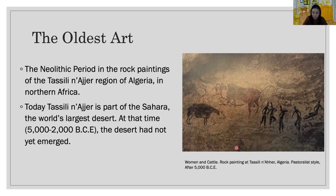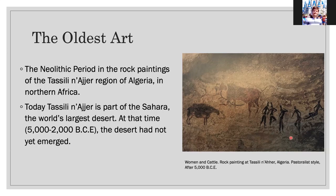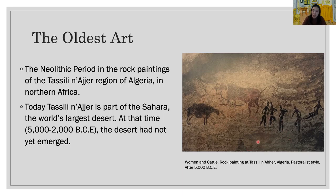We can assume that at that time this area had vast grasslands, home to animals, plants, and people depicted here. However, today the Tassili n'Ajjer is part of the Sahara, the world's largest desert. The figures depict the essence of human and animal bodies in actively posed, stylized silhouettes.